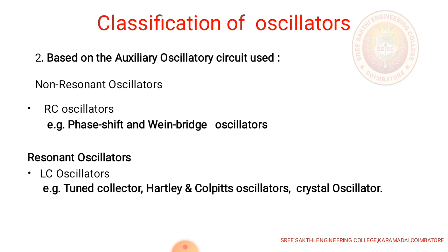Classifications based on the auxiliary oscillatory circuits. In this, there are two cases: non-resonant oscillators and resonant oscillators. Non-resonant oscillators are nothing but the RC oscillators. Examples for RC oscillators are phase shift oscillator and Wien bridge oscillators. And resonant oscillators are nothing but the LC oscillators: tuned collector, Hartley oscillator, Colpitts oscillator, and crystal oscillator.